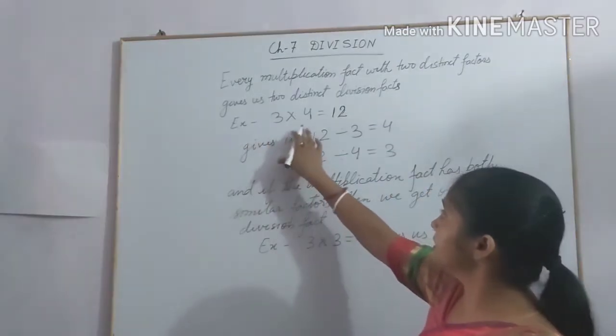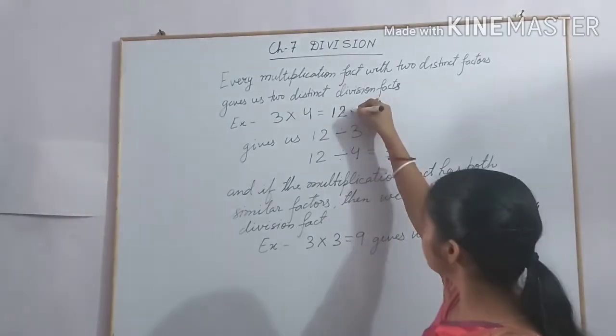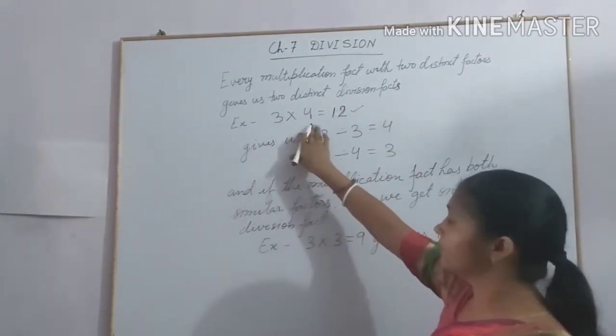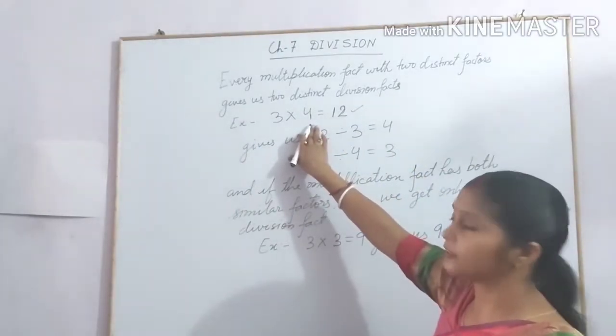Let us see the example 3 into 4 equal to 12. This is the multiplication fact. Here 3 and 4 are 2 distinct factors of 12.